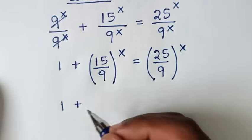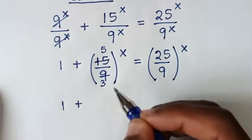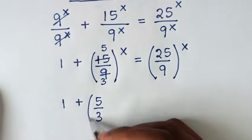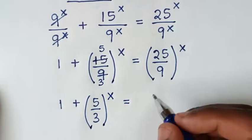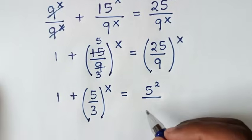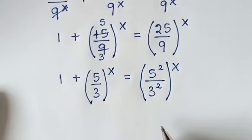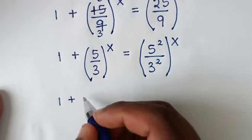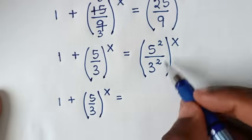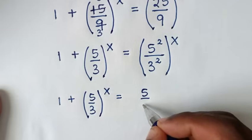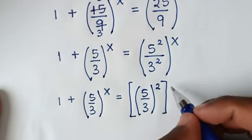In the next step, it will be 1 plus — simplifying 15 over 9 by dividing by 3 gives 5 over 3 — so 1 plus (5/3)^x is equal to (25/9)^x, where 25 is 5 squared and 9 is 3 squared.